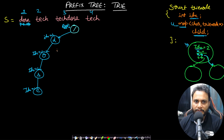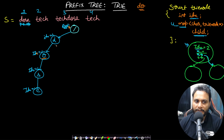Why am I storing all these index values as 1? Because next time if somebody gives me a search word of, say, 'do,' I will start traversing from the root node, search for 'd' then 'o,' stop there, see the index, and return it. You know 'do' is a prefix in a word occurring at index number 1. Now let's try to insert the next word, which is 'tech.'